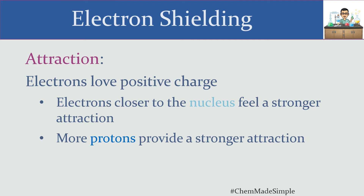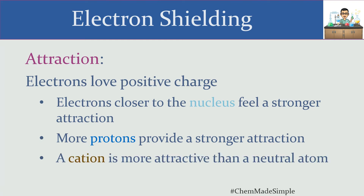All else being equal, when you have more protons on the nucleus, that provides a stronger attraction. It also explains why a cation in general is more attractive than a neutral atom. So if you're taking a look at the electrons that exist around a cation, they're more attracted to that cation than they would be if the same atom were neutral. Positive charge all the way.